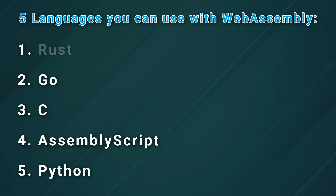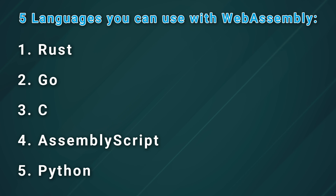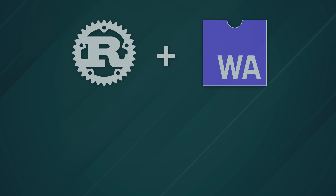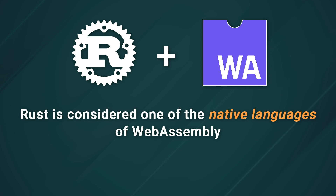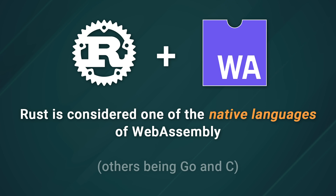Number one is Rust. And you had to know it was going to be number one because Rust is the prototypical language for WebAssembly. The two technologies were born around the same time and have matured together, and it's for this reason that Rust is considered one of the native languages of WebAssembly, others being Go and C.